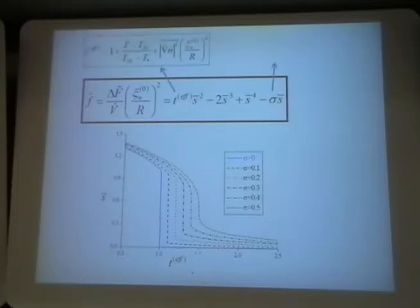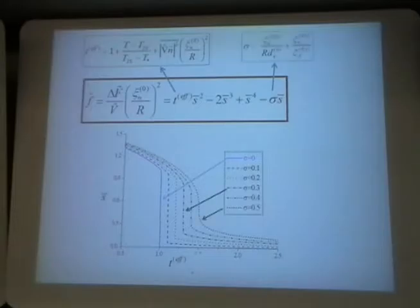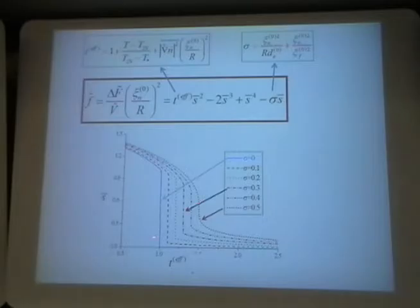If you collect all those terms together, you get a very simple expression. You started with a very complicated system having some ten independent quantities, and you finish with a system that depends just on two quantities. This effective temperature includes the real temperature and the elastic distortion. Then there is a linear term with sigma, which includes the surface contribution and the external field. If sigma is zero you can increase the first-order resolution. If you increase the surface contribution — either by increasing the field or by decreasing R — the first-order character remains initially, but when you reach a critical point, the phase transition is destroyed.